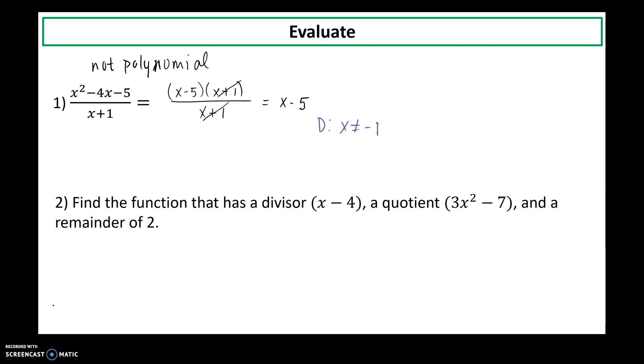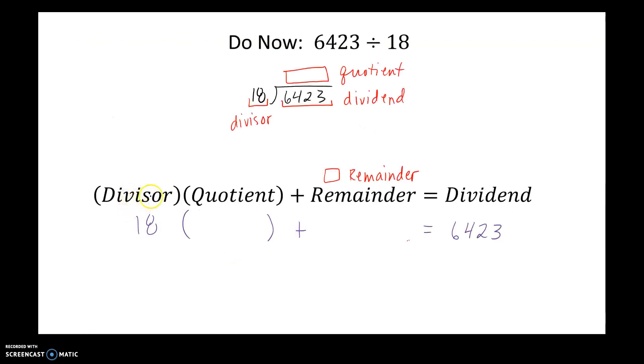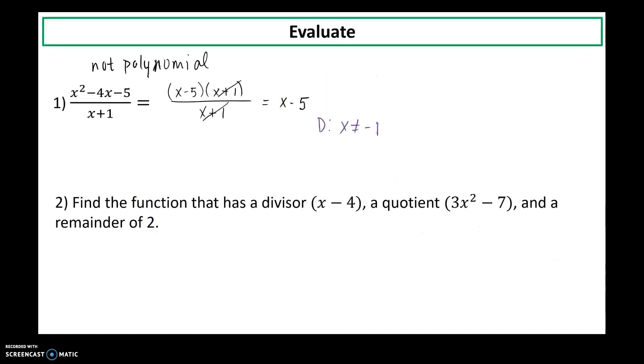Number 2, find a function that has a given divisor, a quotient, and a remainder. Okay, divisor times quotient plus the remainder equals my dividend. So now instead of being numbers, we're talking about polynomials. So my function will be my divisor times my quotient plus my remainder.